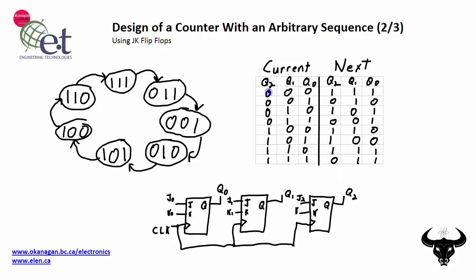Each row of the table shows the current state and then the next state. The next thing that we need to do is, for each of these transitions from state to state, we need to figure out what the J and the K values need to be to cause that transition to occur.